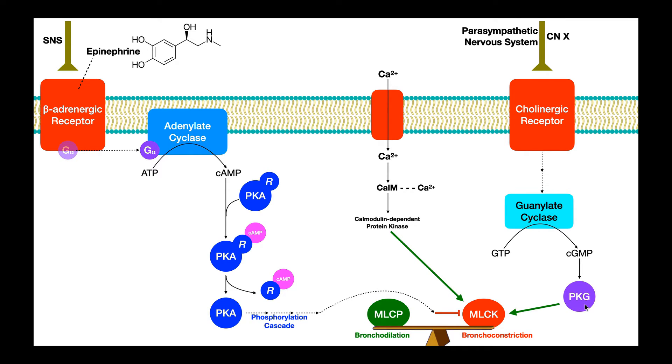One, it's going to activate this kinase called protein kinase G. Now this enzyme is actually able to directly phosphorylate myosin light chain kinase, which activates it. So again, remember the parasympathetic nervous system, it favors bronchoconstriction, because if we're not exercising, if we're just resting and relaxing, we don't need as much air going in and out of the lungs.